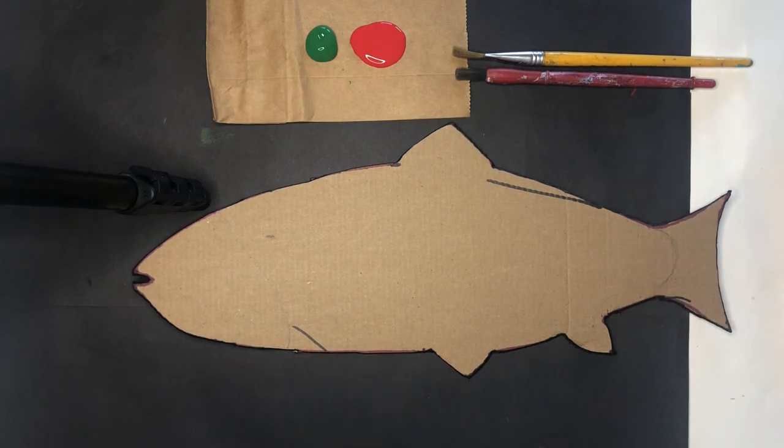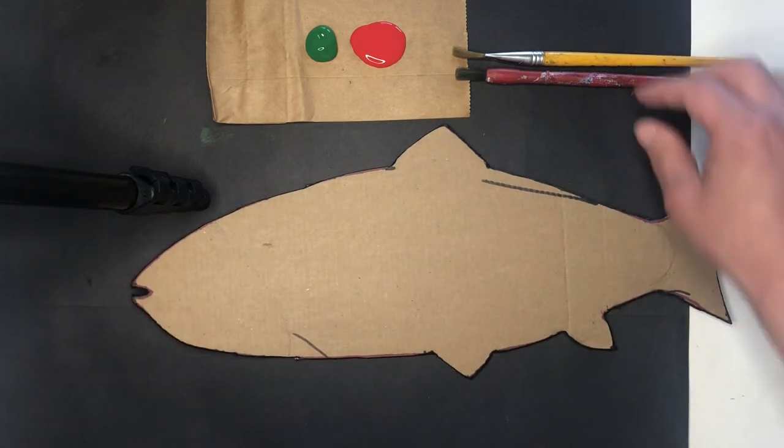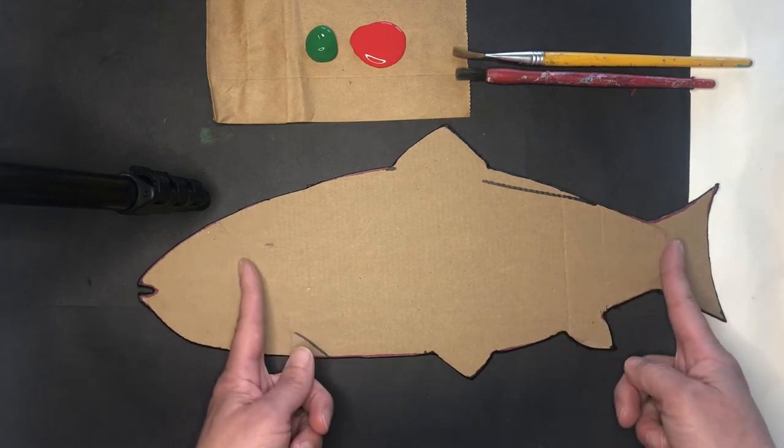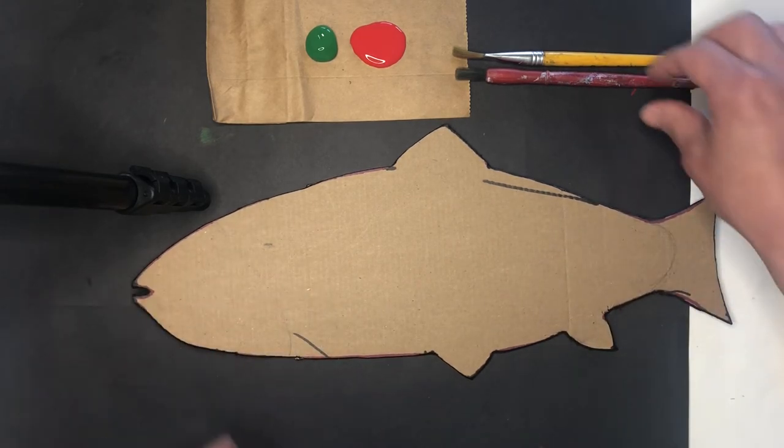All right, and that's it. Those are the only marks I need to make. So I'm going to paint all of the body here where I put my two pencil marks red, and then I'm going to paint the two ends green.